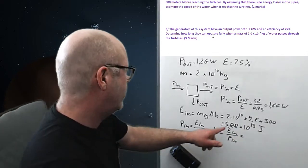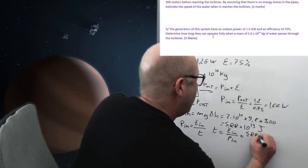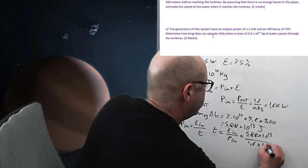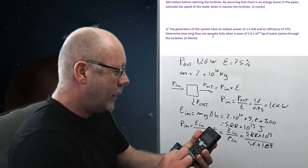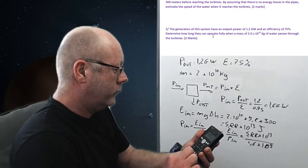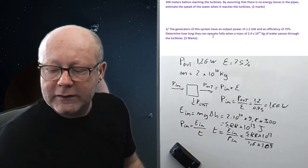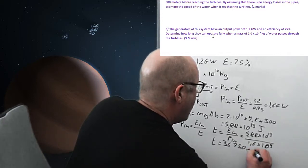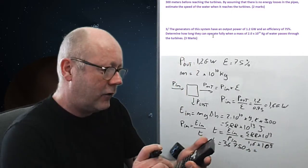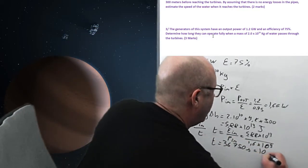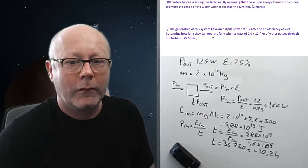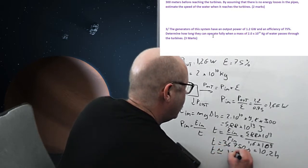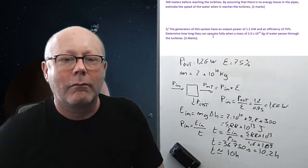So, that's 5.88 by 10 to the 13 divided by 1.6 times 10 to the 9. Let's calculate. 36,750 seconds. And if I want to know this in hours, I divide by 3600, and I find 10.2 hours. Two significant figures again. So, I can just approximate this to 10 hours.